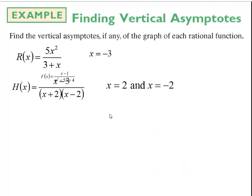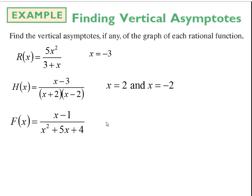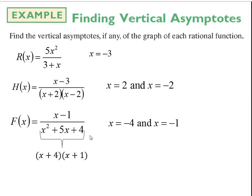Our next example is (x - 1) / (x² + 5x + 4). To find the vertical asymptotes, we take the denominator, set it equal to 0, and find the zeros of that quadratic by factoring. We get x = -4 and x = -1. If I were to graph this function in Desmos or my TI, I would see vertical asymptotes at both of those locations.